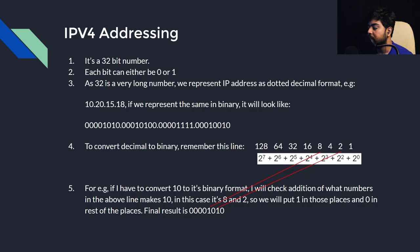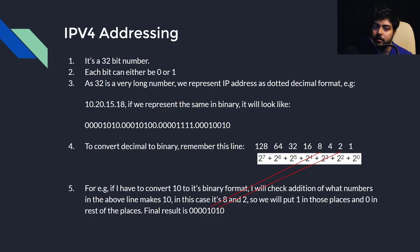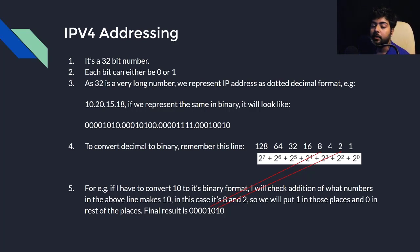Now let's understand how we represent this 32-bit number. If we write a 32-bit IPv4 address in binary form, it will be a combination of 32 zeros and ones. Instead of binary format, we represent IPv4 addresses in dotted decimal form so that it's easier to remember, write down, and configure.